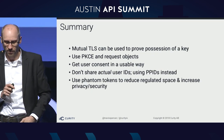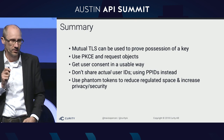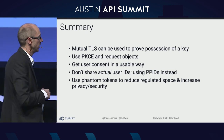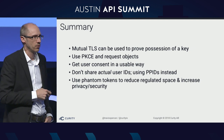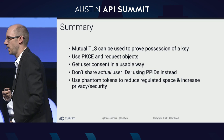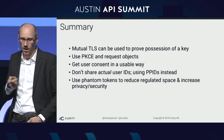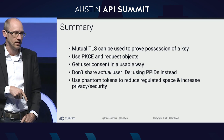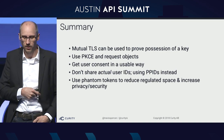In summary: mutual TLS and proof key for code exchange are great ways to protect against bearer token vulnerabilities and redirect vulnerabilities. Get user consent and do a digital signature over it and preserve it. Don't use actual user IDs — use PPIDs and use the phantom token approach.